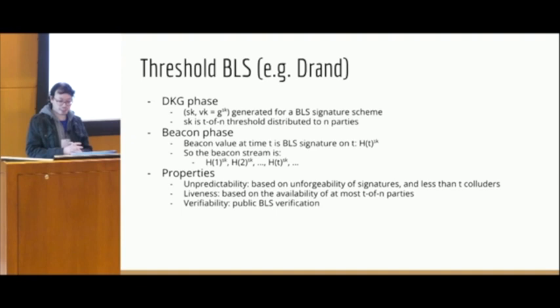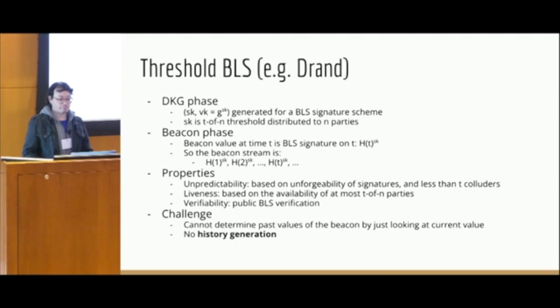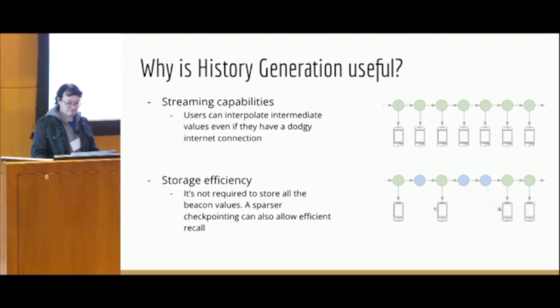Now we observe that it would be good to have an extra property that threshold BLS doesn't have. In particular, we cannot determine past values of the beacon by just looking at the current value. If you look at the random beacon output at epoch 2, which is hash of 2 to the power SK, you cannot predict just by looking at that what hash of 1 to the power SK would be. We call this property history generation. Threshold BLS does not achieve that, easily at least. What Strobe does is achieving this property. Otherwise, Strobe has many structural similarities with threshold BLS. So this is the challenge, or at least the main one.